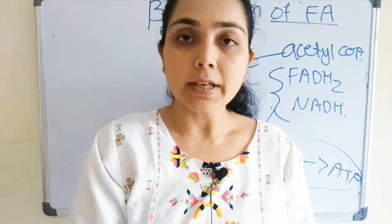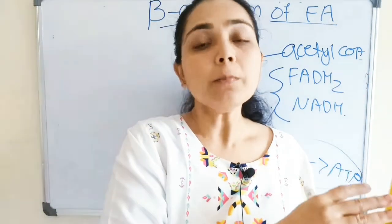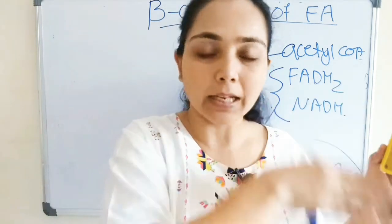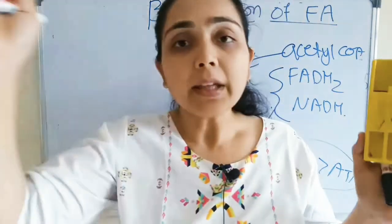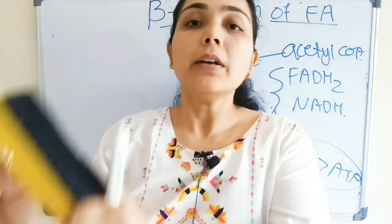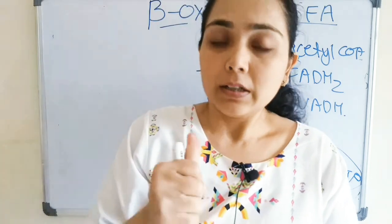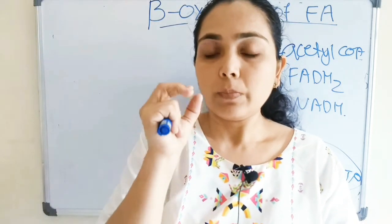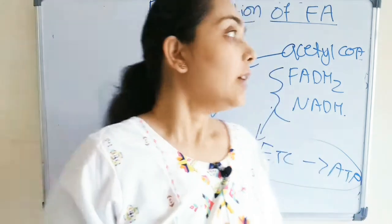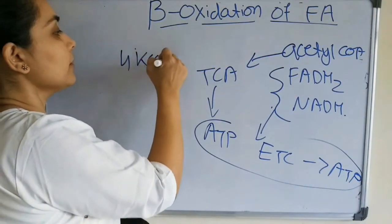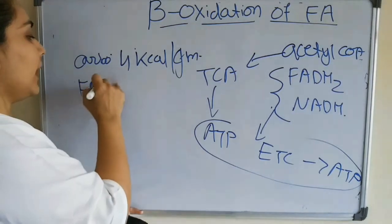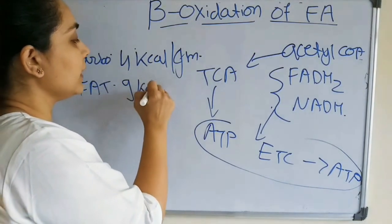When there is a prolonged fasting stage, the fatty acid deposited in the adipose tissue will get broken down — lipolysis will take place. When blood glucose goes down and there is an energy requirement, fatty acid oxidation will take place and it will provide the energy. Per gram of carbohydrate gives 4 kilocalories, whereas fat metabolism gives approximately 9 kilocalories per gram.